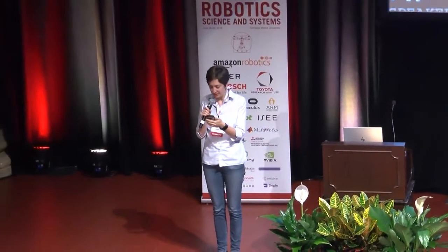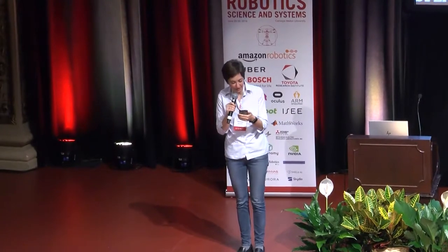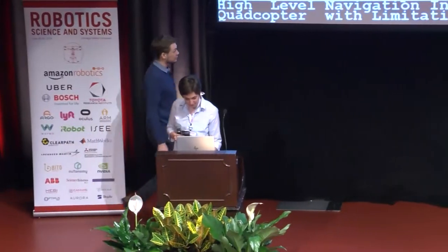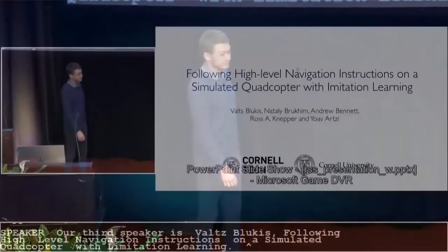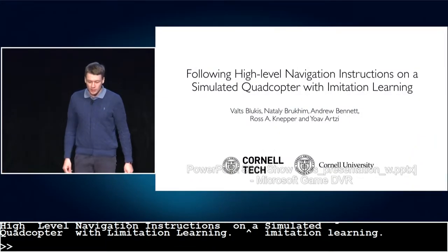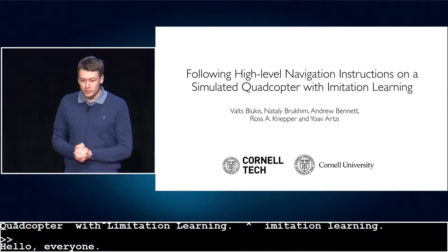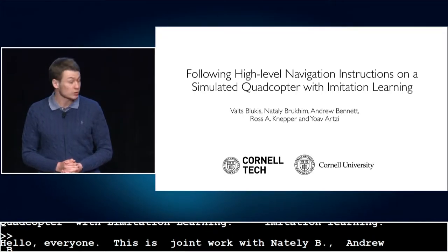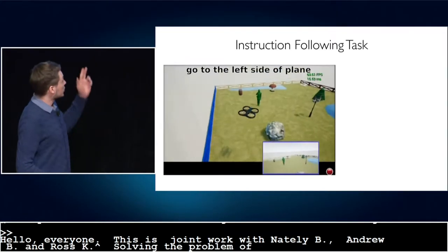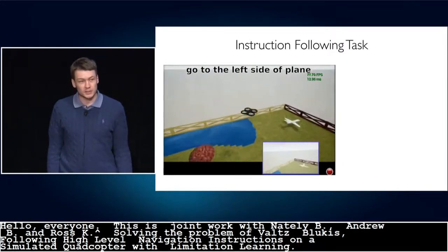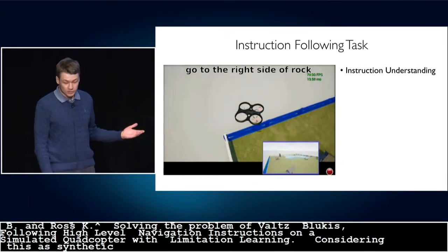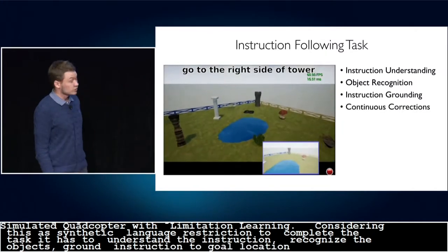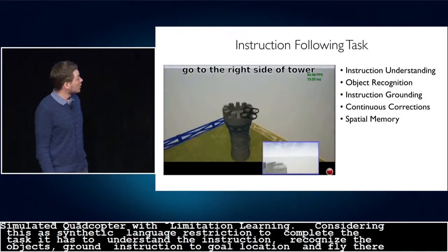Our third speaker is Valts Blukes. He'll be presenting a talk titled Following High-Level Navigation Instructions on a Simulated Quadcopter with Imitation Learning. Hello, everyone. My name is Valts Blukes, and this is joint work with Natalie Brookheim, Andrew Bennett, Ross Knepper, and Joao Wartzee. We're solving the problem of following high-level navigation instructions on a simulated quadcopter with imitation learning. Consider this quadcopter executing a synthetic language instruction. To complete the task, it has to understand the instruction, recognize the objects, ground the instruction to a goal location, and fly there while continuously adjusting its heading. This requires spatial reasoning abilities and memory.